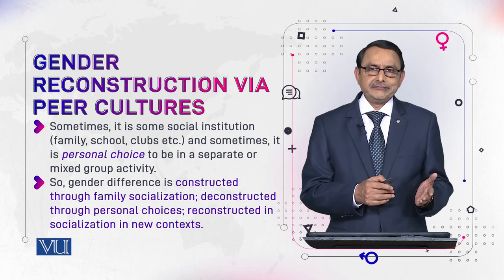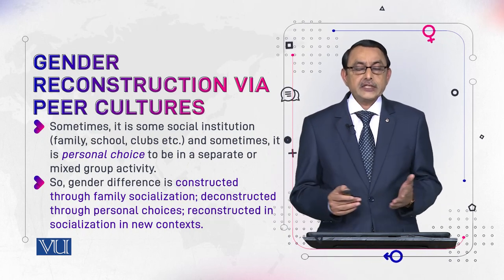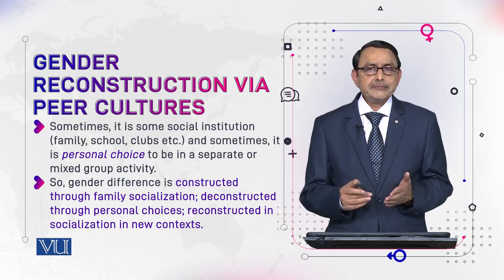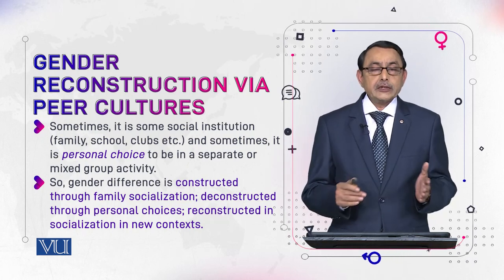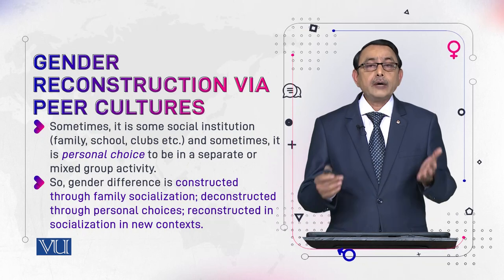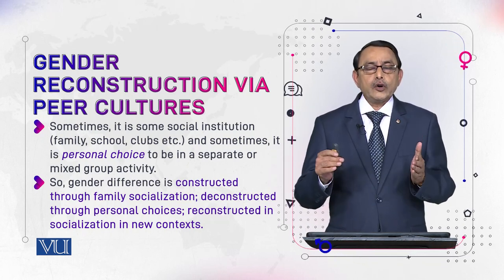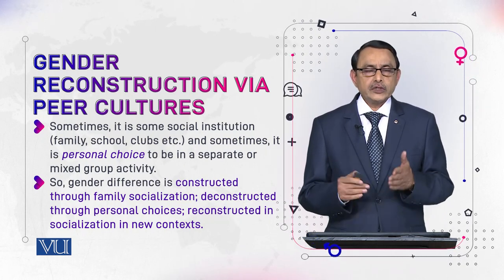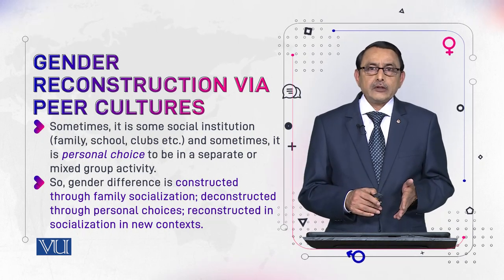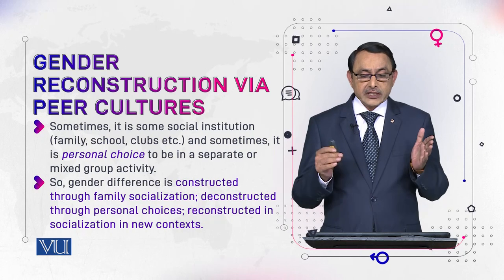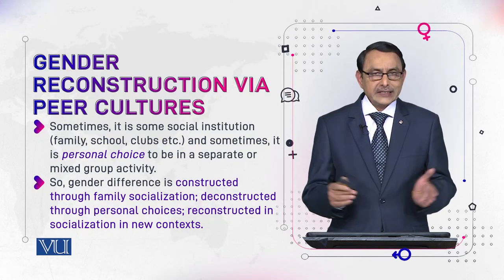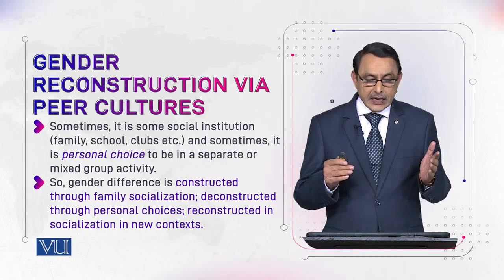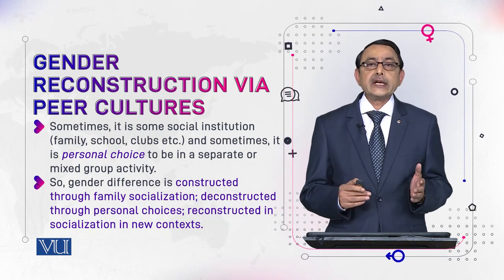To conclude: gender difference is constructed through family socialization. We started with family and moved to peer culture, discussing construction, then deconstruction through desire, then reconstruction. To sum it up: gender difference is constructed through family socialization, then deconstructed through personal choices, and then reconstructed through socialization in new contexts.